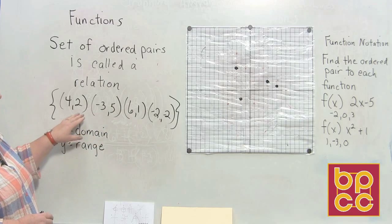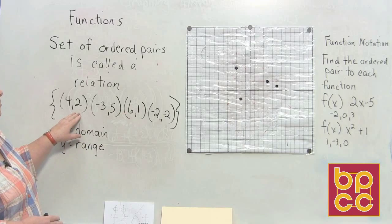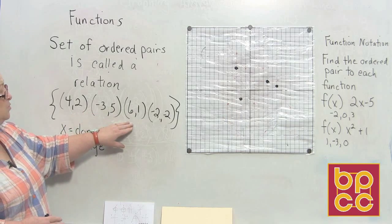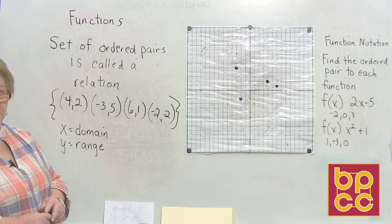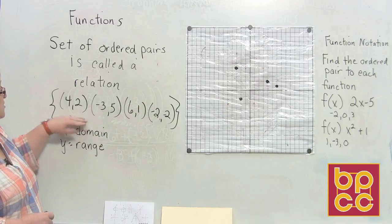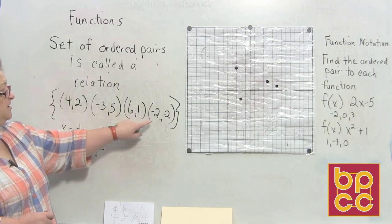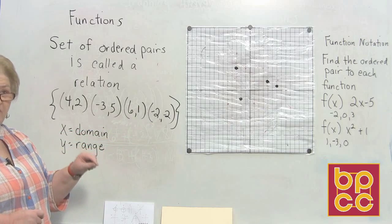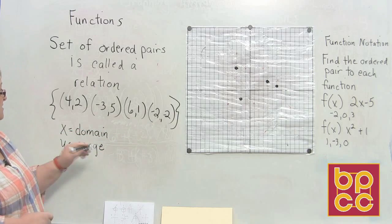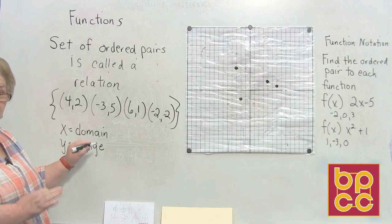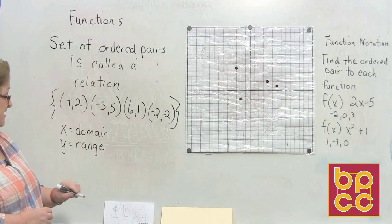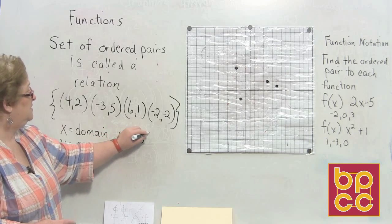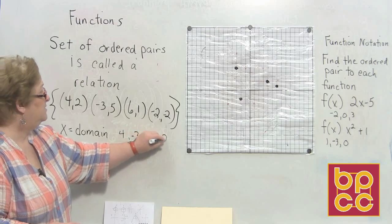If you recall, we've plotted these before and I have them plotted on my board: (4, 2), (-3, 5), (6, 1), and (-2, -2) because I need you to see it as we discuss this. The first number in each of these ordered pairs is the X, and the name for the X's is referred to as the domain. So the domain of this set would be 4, -3, 6, -2.